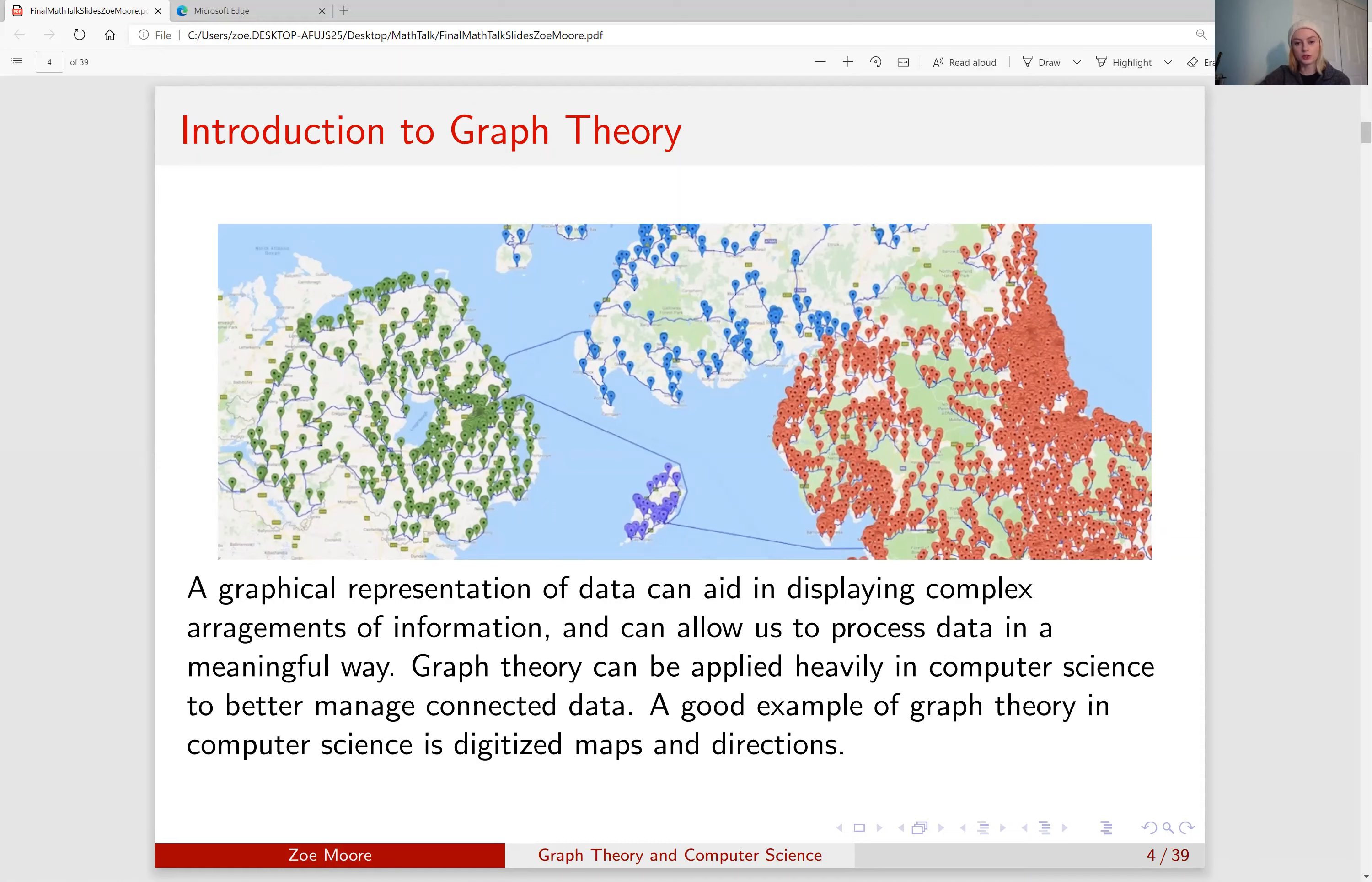In this picture we have color-coded pubs throughout the United Kingdom and the lines connect those pubs so you can get between them in the shortest path possible. Graph theory can be applied heavily in computer science because it provides a way to better manage connected data. A good example of graph theory in computer science is digitized maps and directions.